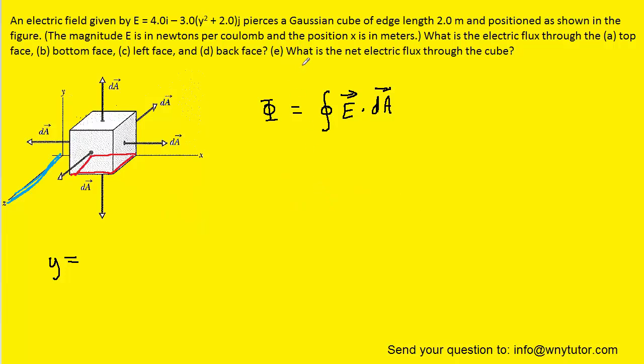Finally, part E, the total or net electric flux through the cube, can be obtained simply by adding the flux through all six sides of the cube. We have the top, bottom, left, right, front, and back. We recall that for the back face, the electric flux was zero. And for the same reason, the electric flux through the front face is also zero.